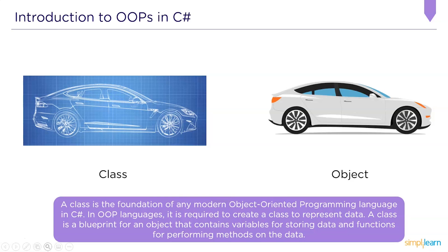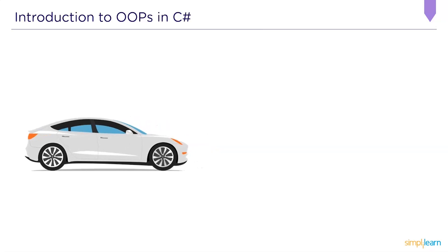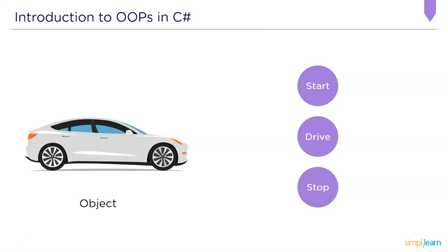A class is the foundation of any modern object-oriented programming language. In OOP languages it is required to create a class to represent data. A class is a blueprint for an object that contains variables for storing data and methods for performing operations on that data. Each object you create will have its own variables and methods used to manipulate those values — for example, a car object can have start, drive, and stop methods.